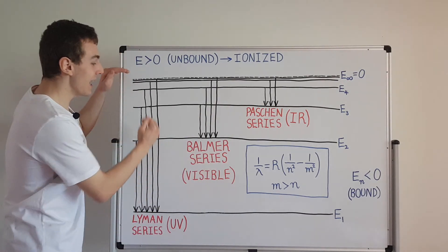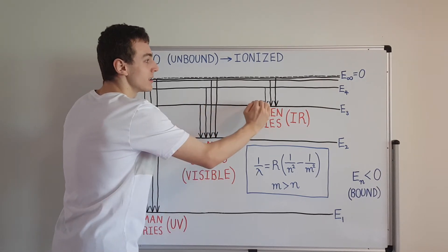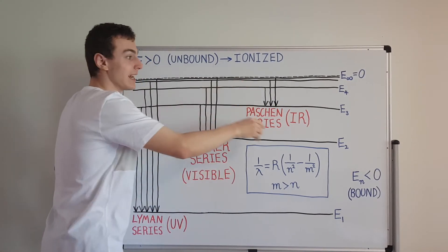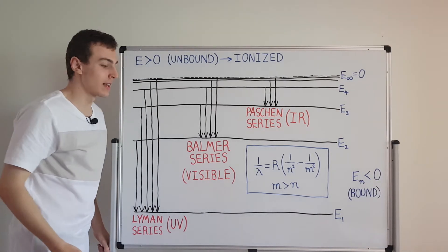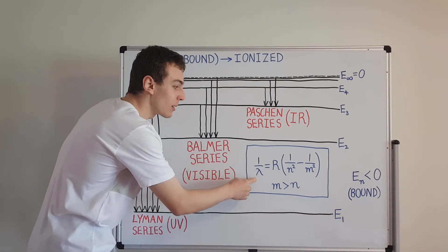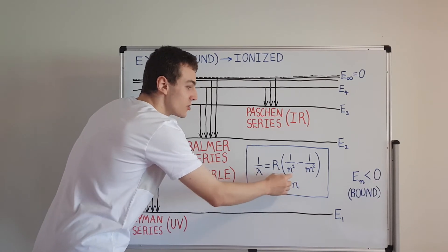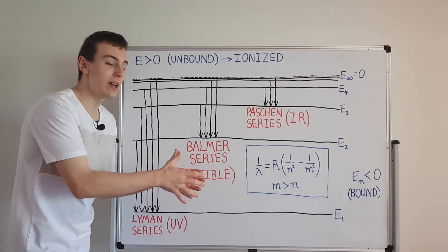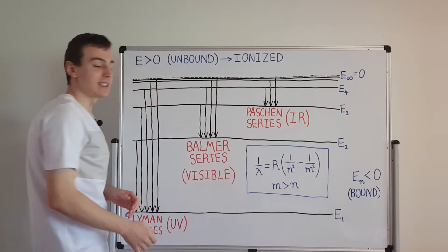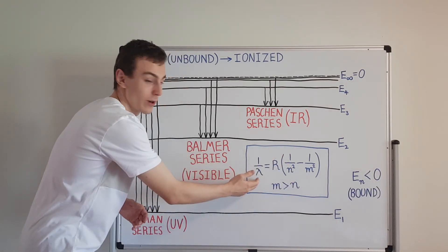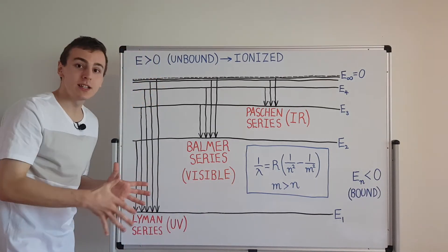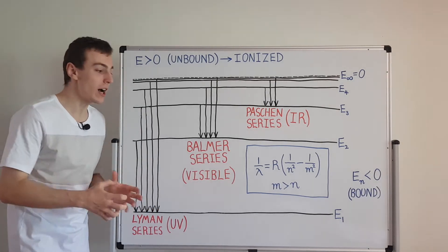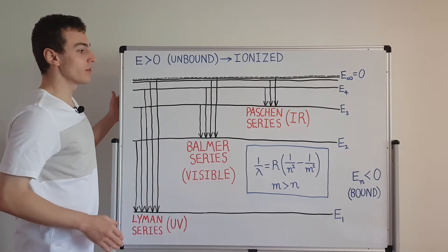Each series converges to a wavelength associated with the energy difference from the lowest level in that series to E equals 0. The Paschen series converges to E3. You get the wavelength by plugging in the integer values from the diagram. This was experimentally determined first, and then the Bohr model came into fruition and allowed us to derive this expression from first principles — that's the beauty of the Bohr model.